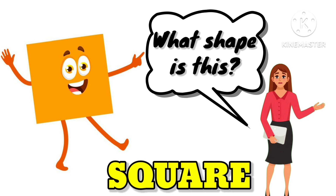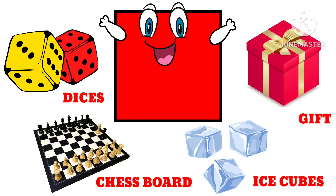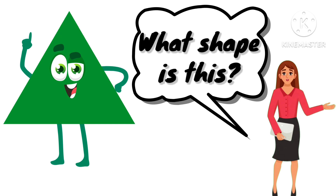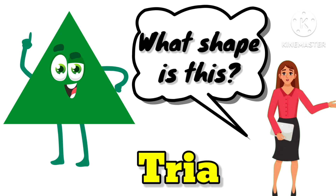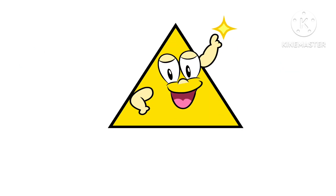What shape is this? This is a square. So kids, let's learn about the objects that are square in shape. Examples: dices, chess board, ice cubes, and gift boxes are all square in shape.